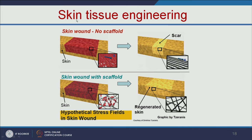Let us see the example of skin tissue engineering. Suppose you have a wound on your skin — you are losing some skin cells, and when the skin contracts, it forms a scar. But when you replace the damaged cells with a scaffold loaded with skin cells, it will regenerate the skin and there will be no scar formation.